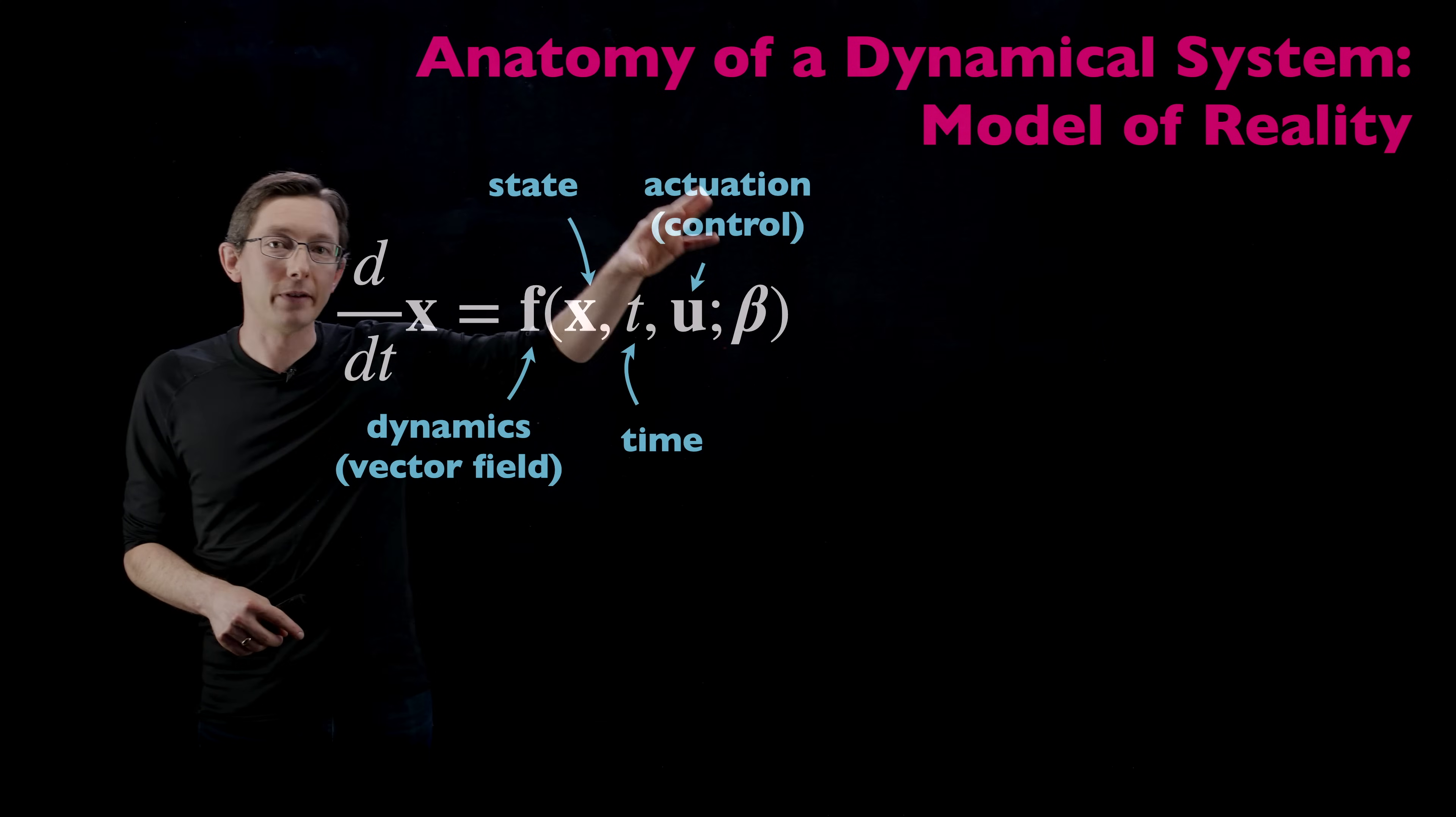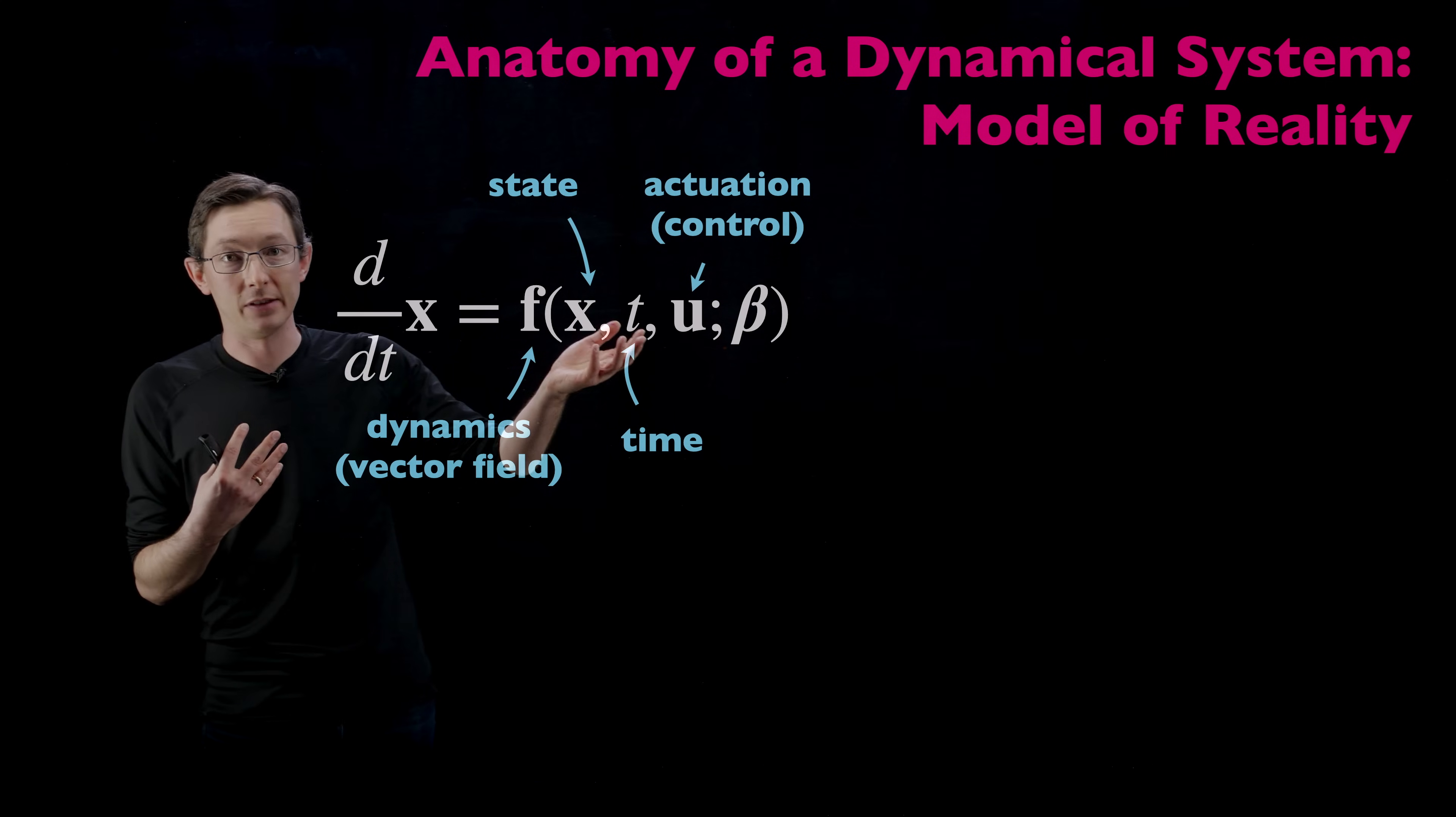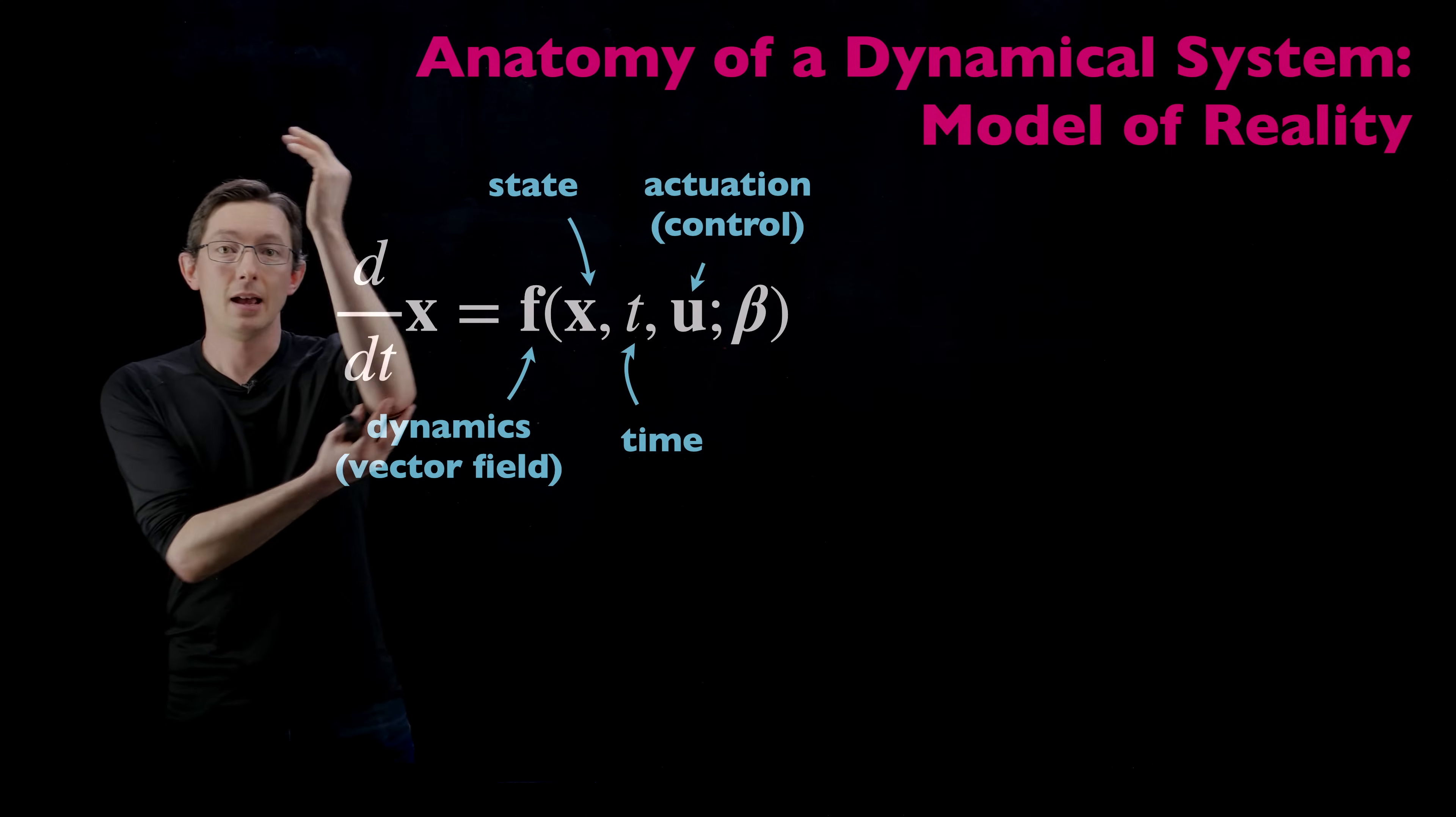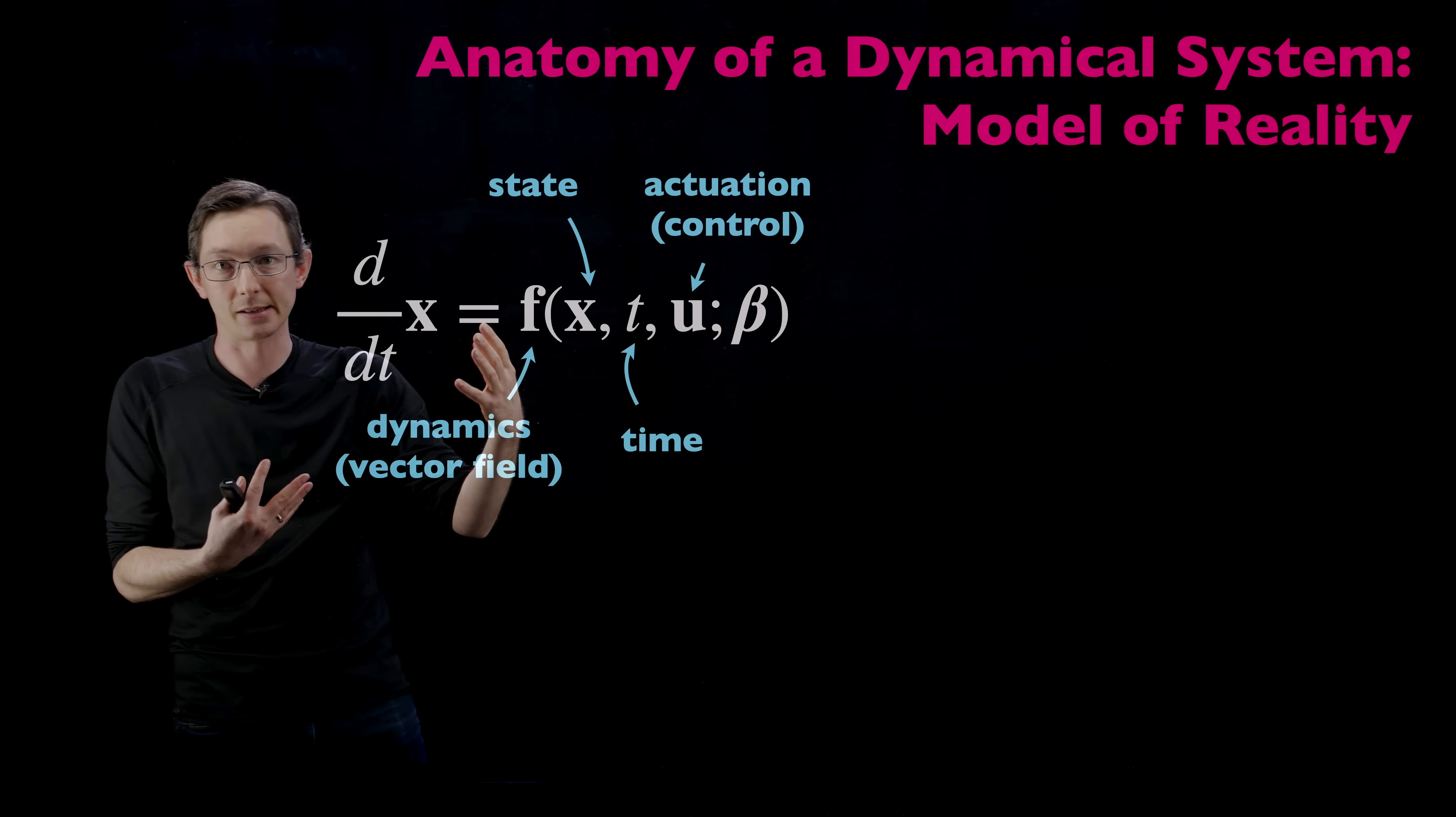U are all of the variables that we have active control over. So maybe we have some variables we can manipulate to try to change the behavior of the system. Those are our control knobs and those go in this vector U. In the case of the pendulum, maybe I put that pendulum on a cart and I can accelerate that cart. I can drive that cart around and that would be my control input to try to change the dynamics of my system.